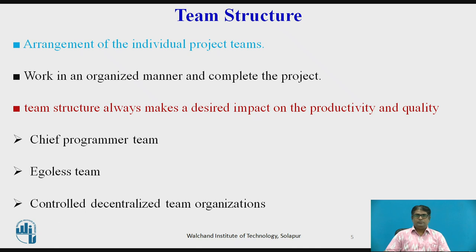The structure of the working team during the development process is very important. Team structure means the arrangement of individual project teams. The project team must be arranged so that they work in an organized manner and complete the project as a unit. The team structure always makes a desired impact on productivity and quality. Based on the type and complexity of the project, the project manager organizes the team differently. There are basically three formal team structures: chief programmer team, ego-less team, and controlled decentralized team.